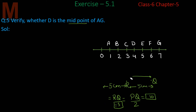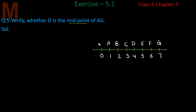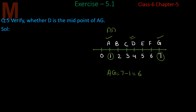Now looking at our problem — we have to tell whether D is the midpoint of AG. Here A is at position 1 and G is at position 7. So the length AG = 7 minus 1 = 6 units.